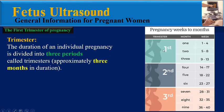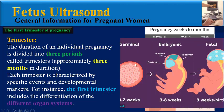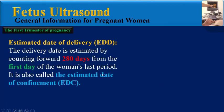Another term is trimester. The duration of an individual pregnancy is divided into three periods called trimesters, approximately three months in duration each, including the first, second, and third trimester. Each trimester is characterized by specific events and developmental markers. For instance, the first trimester includes the differentiation of different organ systems, including the central nervous system, extremities, and other organs.